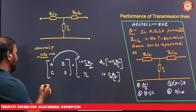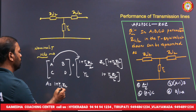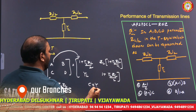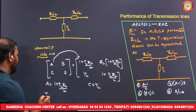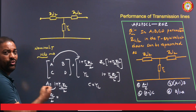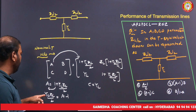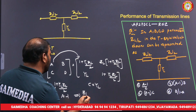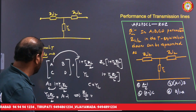From the ABCD parameters, A = 1 + YL·ZL/2. Rearranging, YL·ZL/2 = A − 1, so ZL/2 = (A − 1)/C, since C = YL. Therefore ZL/2 in the nominal T equivalent can be expressed in terms of the ABCD parameters as (A−1)/C.